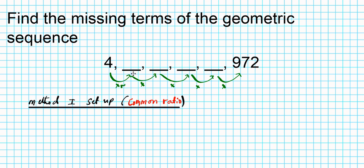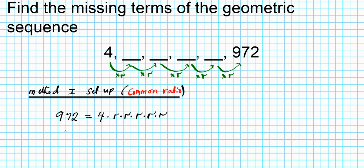So if you multiply 4 by R, you get the second term; by R again, the third; by R, the fourth; by R, the fifth; and by R, you get the sixth term. The common ratio method involves setting up the equation: the final term, 972, equals the first term, 4, times the common ratio multiplied five times, which is R to the fifth power. By solving this equation, I can determine R, which helps generate the missing terms.